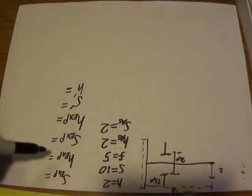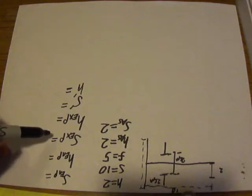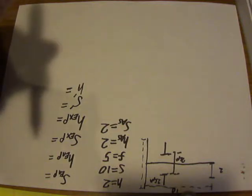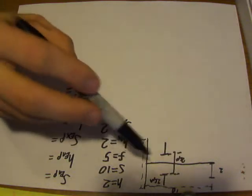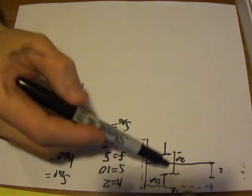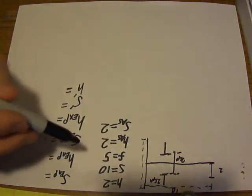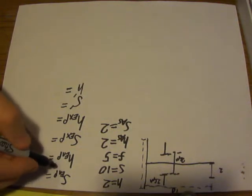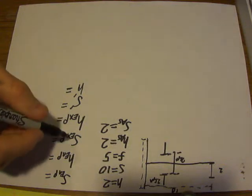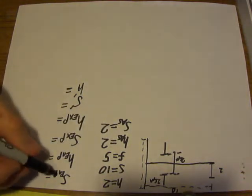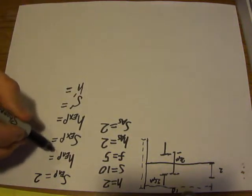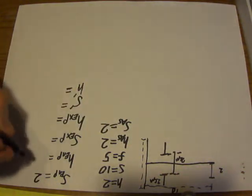Without using any math we can already solve for some of these variables by following some simple rules. The fact that the aperture stop is in front of the lens effectively means that the entrance pupil is the same as the aperture stop. So the position and the height of the entrance pupil will be the same as the position and height of the aperture stop. The position of the entrance pupil is 2 centimeters, and the height of the entrance pupil is 2 centimeters.